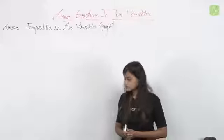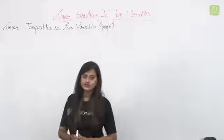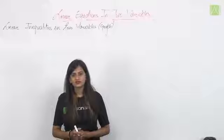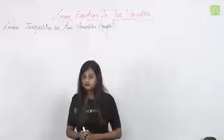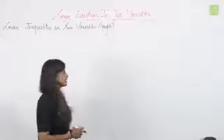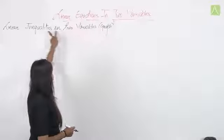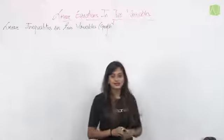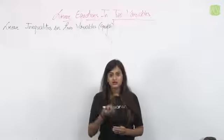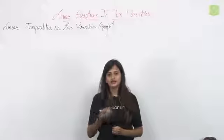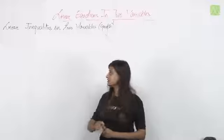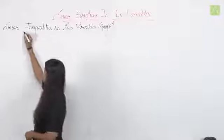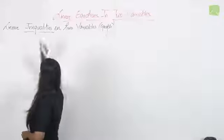Linear inequalities — let's first understand what this means and then read its graph. The first word to understand is 'linear,' which we have already studied. Linear means having degree one. Any expression whose degree is one, we call it linear. The main word now is 'inequality.'